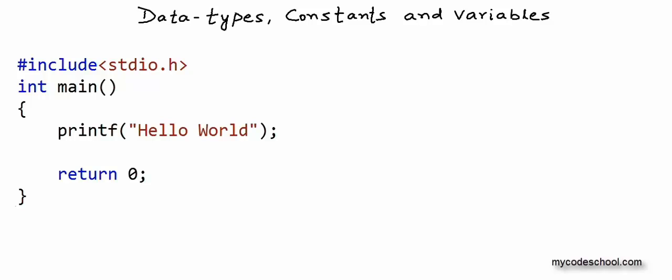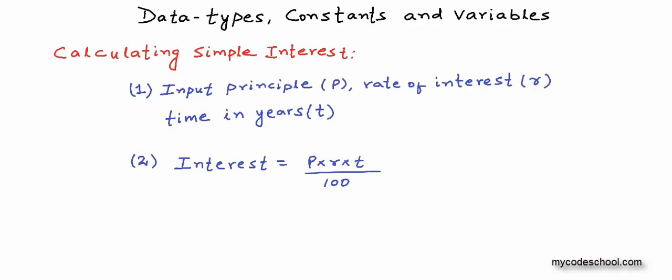Let's say we want to perform the task of calculating simple interest. The data that we will work upon will be principal amount, which will be a positive number — it can be a real number because it can have a fractional part. Rate of interest, once again it can be a real number. Time in years will be a positive integer. To calculate the interest, we will have to perform two multiplication operations and one division operation.